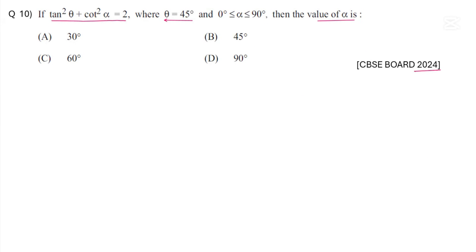It was asked in CBSE Board Exam 2024. So here you are given tan²θ + cot²α = 2, and θ is 45 degrees. So tan²45° + cot²α = 2.